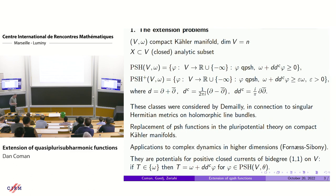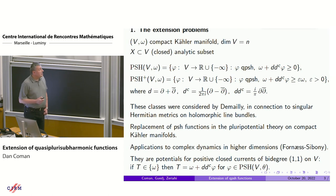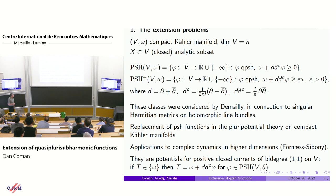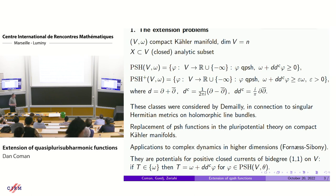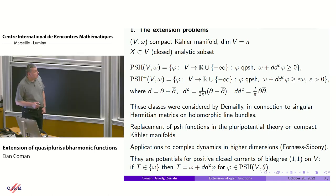So to begin: X will be a compact Kähler manifold, omega a Kähler form, dimension N, and V an analytic subvariety. There are the classes of omega-plurisubharmonic functions. Quasi-plurisubharmonic means locally the sum of a smooth and a plurisubharmonic function. You put a lower bound on the curvature in this way and you get omega-plurisubharmonic functions. And then strictly omega-plurisubharmonic — this plus class — requires that this current is a Kähler current, so it dominates a small multiple of the Kähler form.